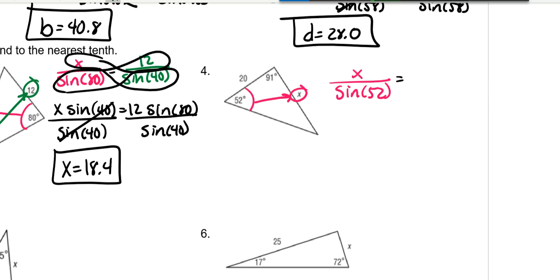And then the 20 goes with this angle, which we don't know. So in order to find out that one, we do 180 minus 52 minus 91. And that is 37 degrees. So it's the sine of 37 over with 20 on top.